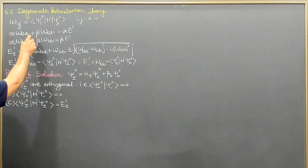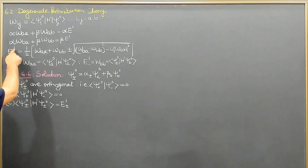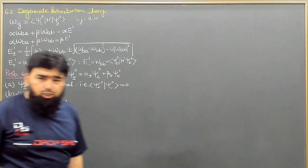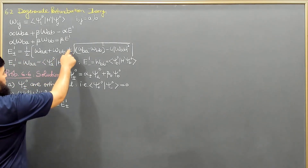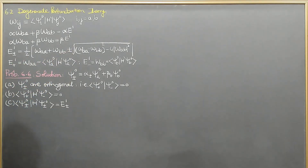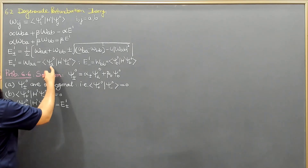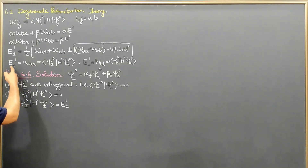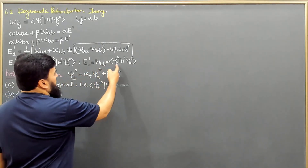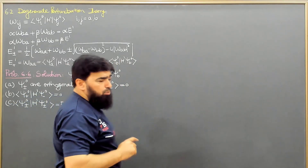Combining those two equations using the quadratic formula, we obtained the energy values E1 — the first-order correction to the energy — with a plus and minus sign. After getting the energy, we found that when the perturbation is applied to the unperturbed state ψ_A⁰, the result gives W_AA equal to E1⁺, and W_BB is the perturbation applied on the unperturbed state ψ_A⁰ via H'.